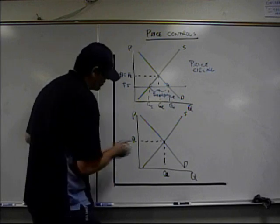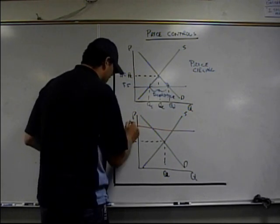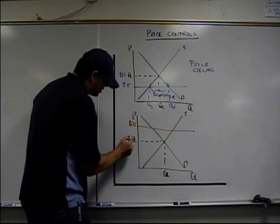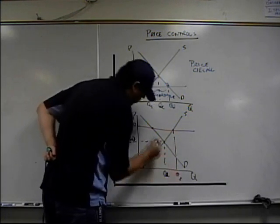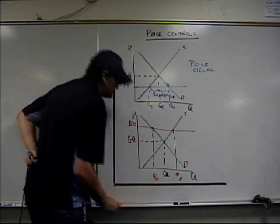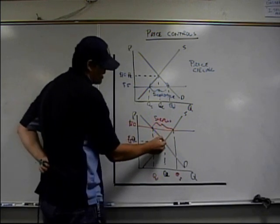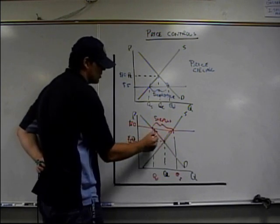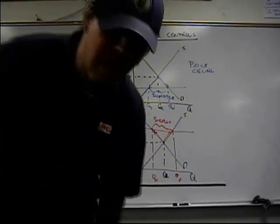Down here, a price floor. A floor is a basement, right? You can't go through the floor. Let's say the floor is at $10, equilibrium price was at $5. Now the quantity supplied is here. The quantity demanded is here. And now, as you can see, we have a surplus. At this high price, producers want to produce more. Consumers don't want to buy as many. We have a surplus. We are done. Until next time.